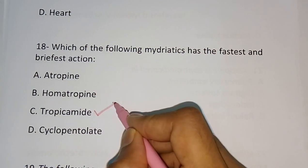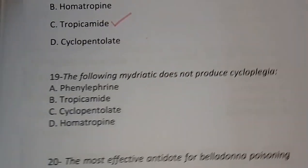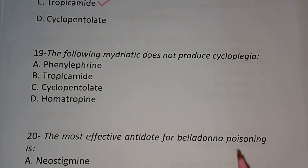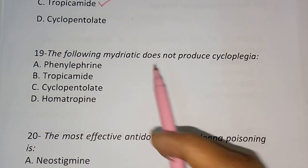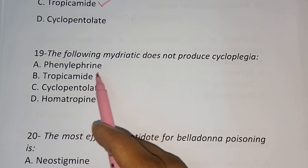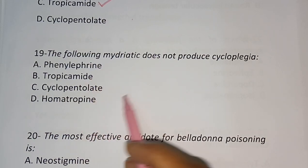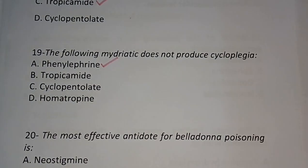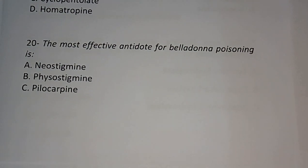Question number nineteen: The following mydriatic does not produce cycloplegia — (A) phenylephrine, (B) tropicamide, (C) cyclopentolate, (D) homatropine. Phenylephrine is the correct answer.